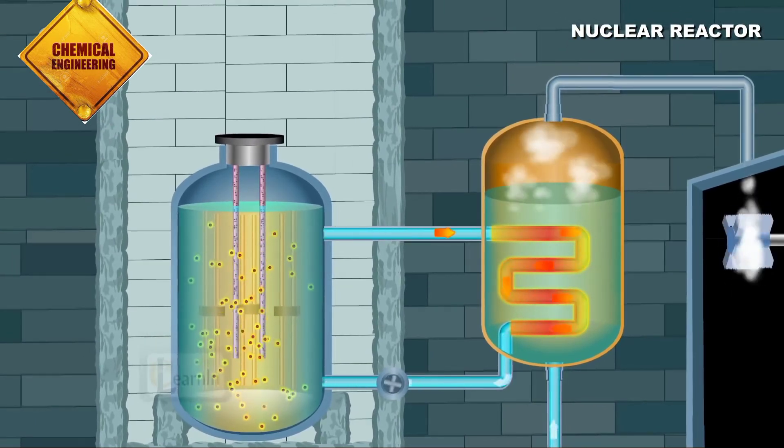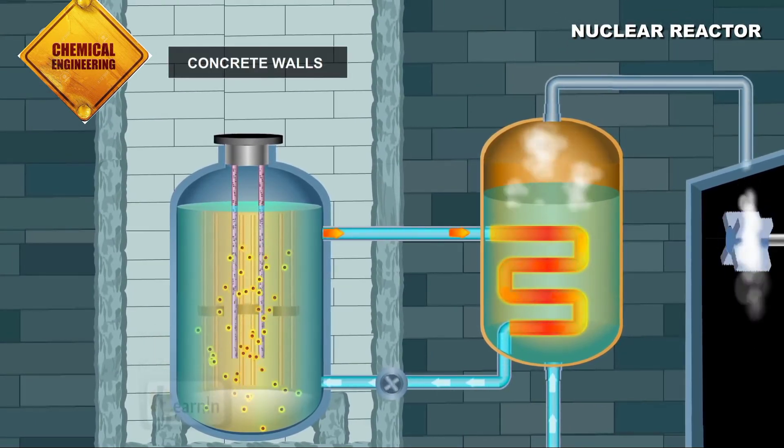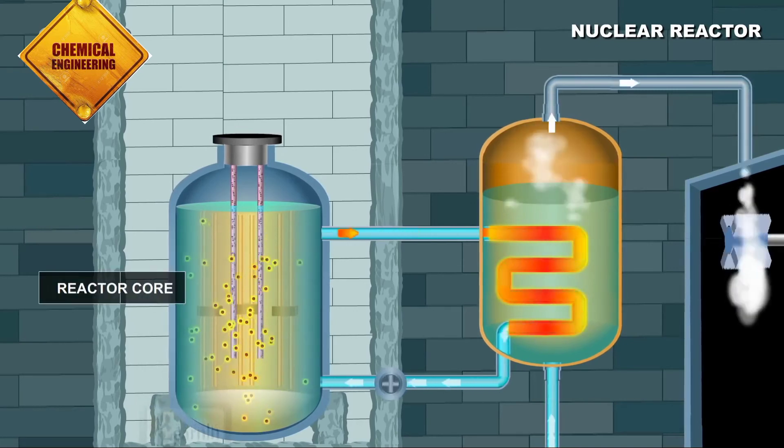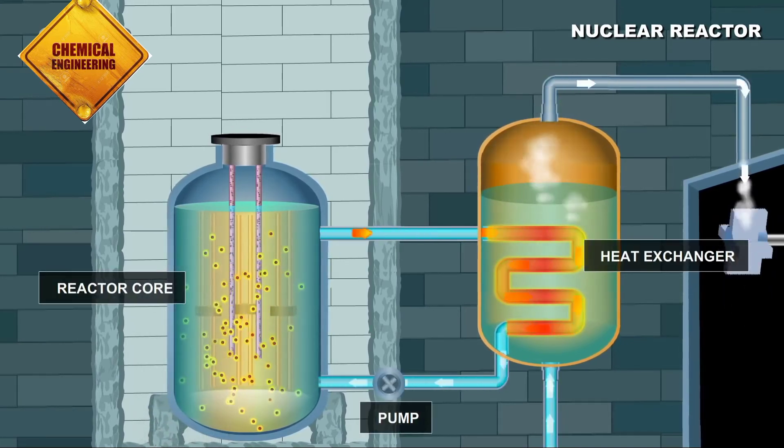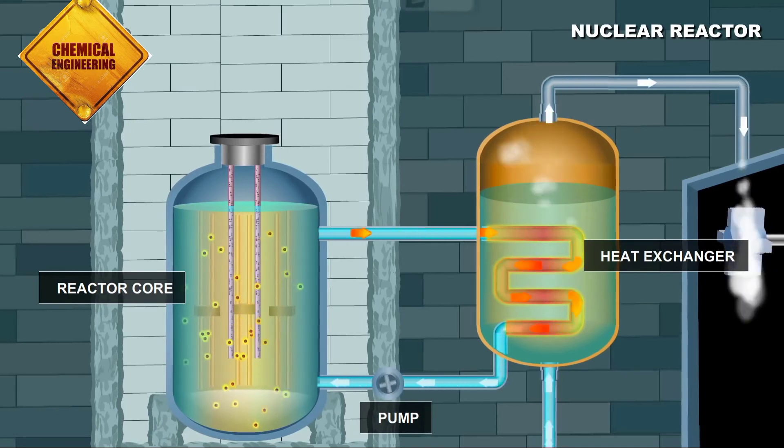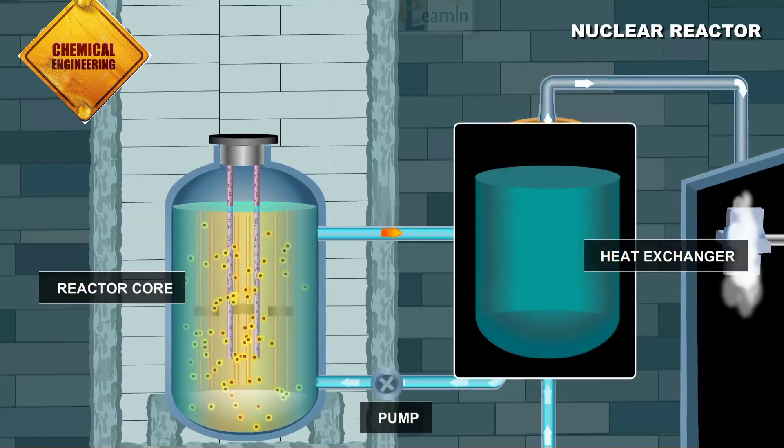It's usually enclosed in a shield made of thick concrete walls. It consists of a reactor core, pump, and heat exchanger. The reactor core and pump are placed in contact with the water which is usually the heat exchanger.